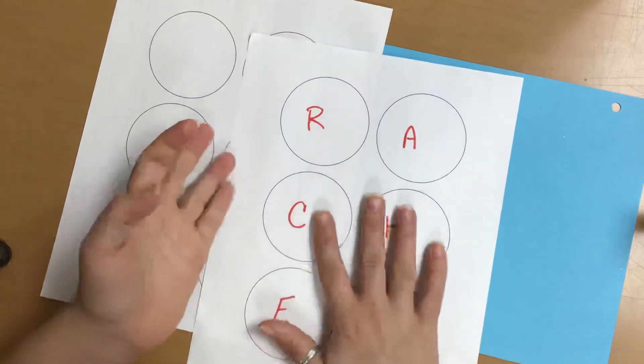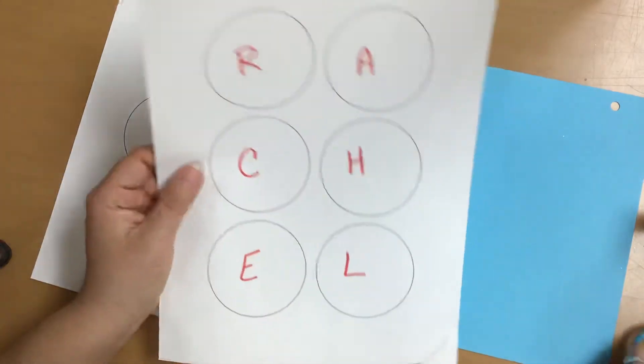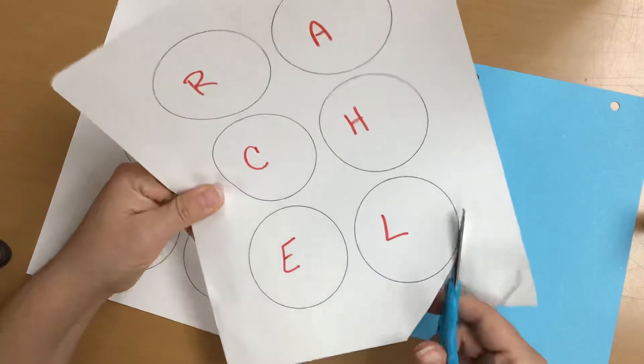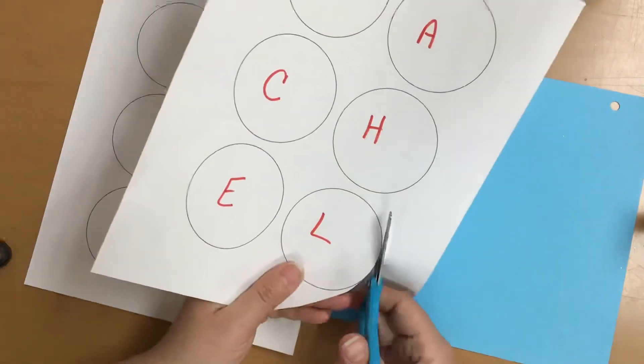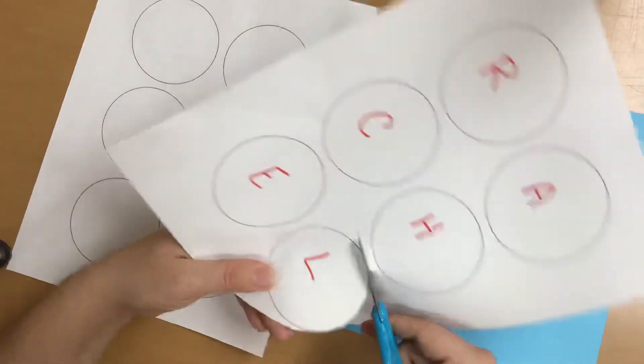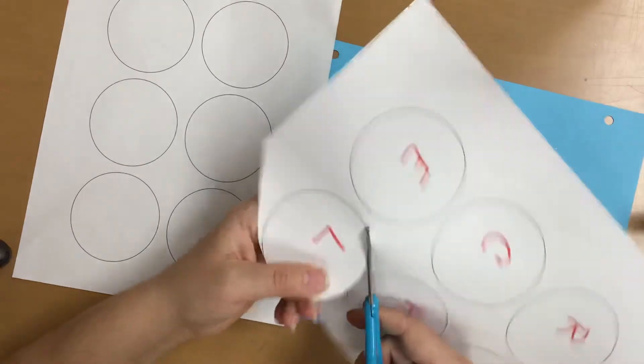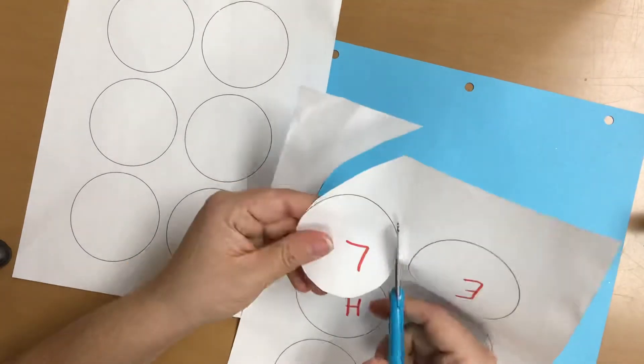All right. Did you find your letter in there? Keep practicing. So what we're going to do is we're going to cut out our circles. They don't have to be perfect, but just go ahead and cut them out.